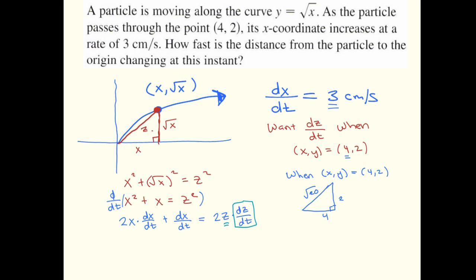So now I've got everything I need, so I'll just plug the values in. 2 times 4, dx/dt is 3, plus another 3 equals 2 root 20 times dz/dt. And now the rest of the problem just hinges on your algebra.